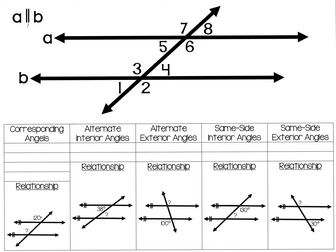Today we will look at two parallel lines A and B. Parallel means they have the same slope, so they're going to continue on forever and never touch. These two lines are crossed by a transversal. There are five different types of angle relationships present in this situation.